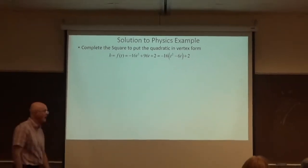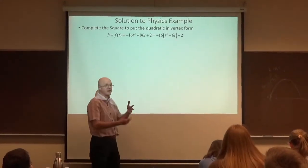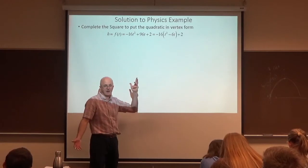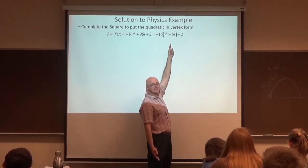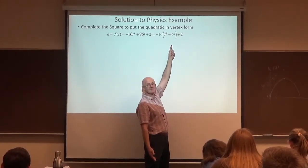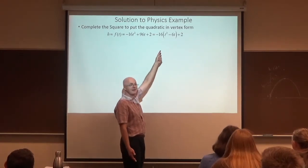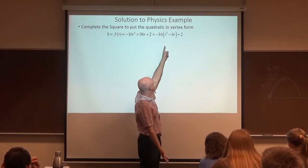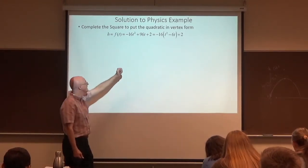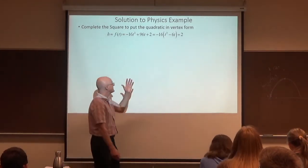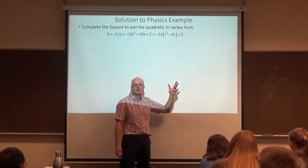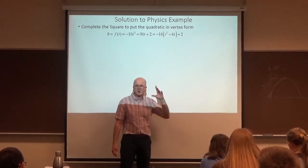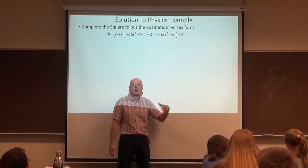If the coefficient of t squared is not one — which it's not here, it's negative 16 — you should factor that out of the first two terms. I picked 96 here because 96 is divisible by 16; 96 is 16 times 6. We get negative 16 out, the coefficient of t squared becomes positive 1, and the coefficient of t becomes negative 6. Once you've done that, take the coefficient of t, which is negative 6, divide it by 2, and square it.